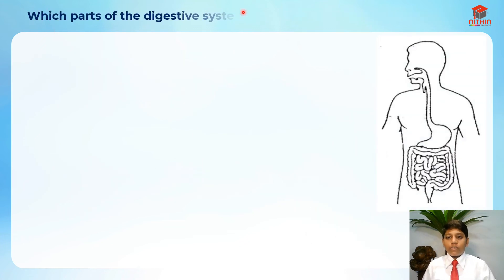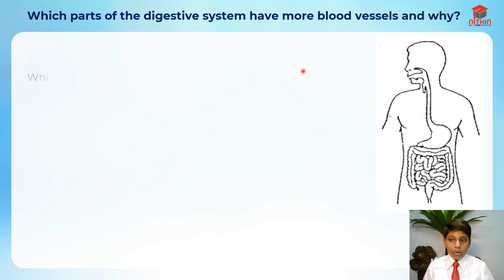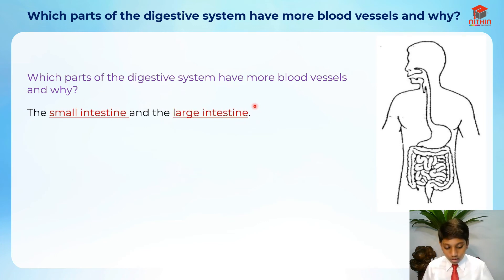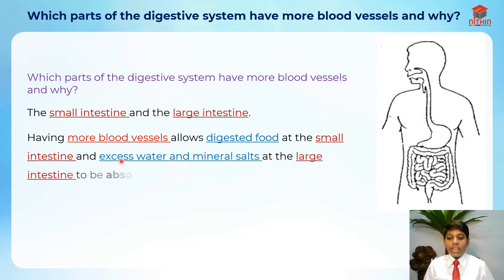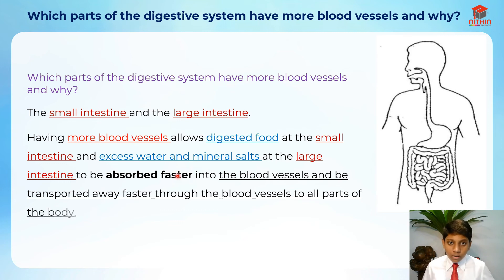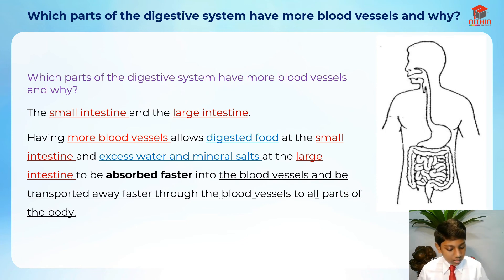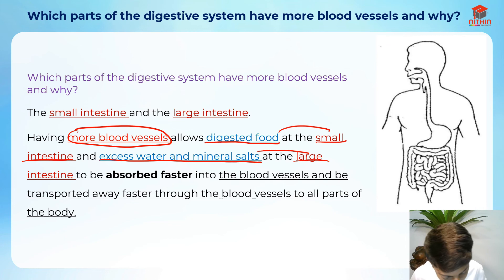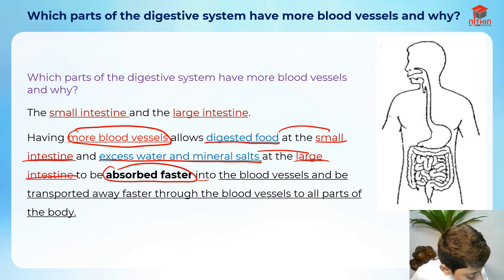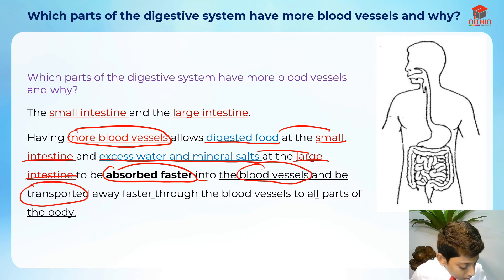The parts are the small intestine and large intestine. Having more blood vessels allows the digested food at the small intestine, and excess water and mineral salts at the large intestine, to be absorbed faster into the blood vessels and be transported away faster through the blood vessels to all parts of the body.